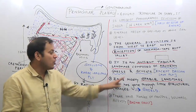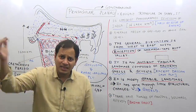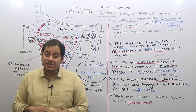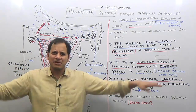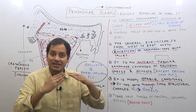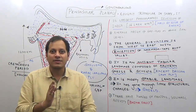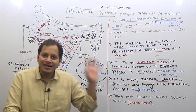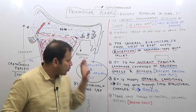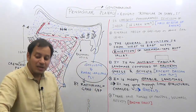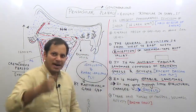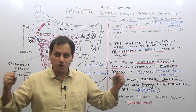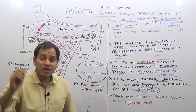A shield means a stable landmass that has gone through little structural change. A shield is strong and stable — like a shield used in battle. While some structural changes have occurred historically, such as rifting, faulting, and the volcanic eruption of the Deccan lava plateau, the peninsular plateau in its living memory has remained flat, calm, and very stable. The peninsular plateau is an example of a shield.